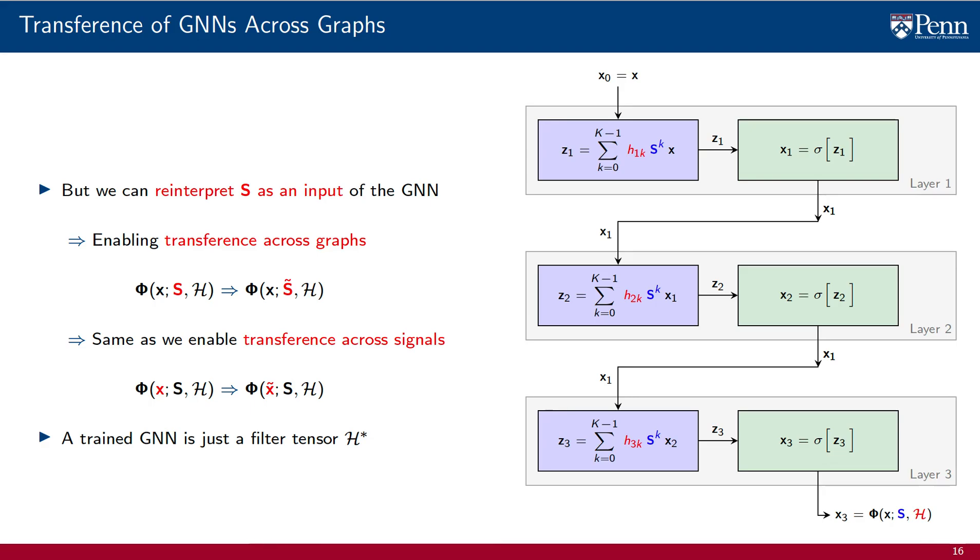To close this digression on transference of GNNs, let me say that the word transference is reserved to the case when a GNN that has been trained on graph S is executed on graph S tilde. Alternatively, we may choose to train on a family of graphs in the same way in which we train on a family of signals.